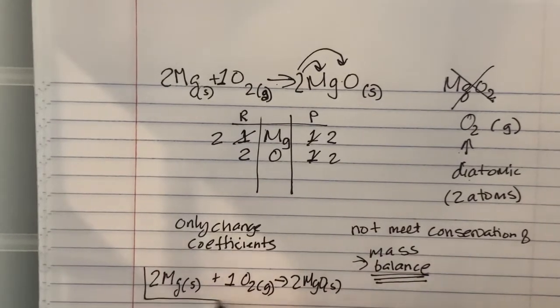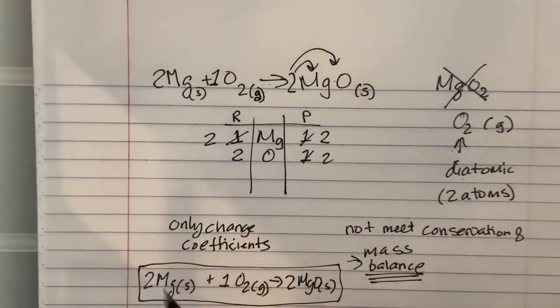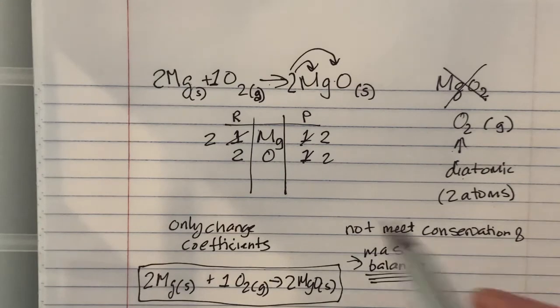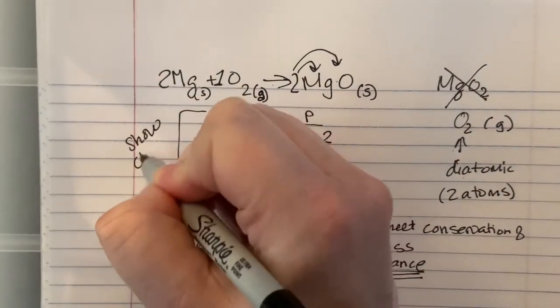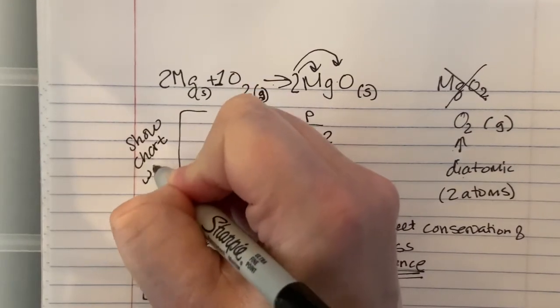You have to show your chart - that's how you get your work for partial credit.